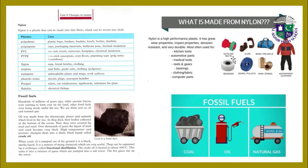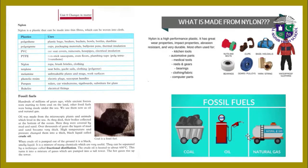When crude oil is pumped out of the ground, it is a black, smelly liquid. It is a mixture of many chemicals which are very useful and can be separated by a technique called fractional distillation. Nylon is a high-performance plastic with great wear and impact properties — very durable. It is most often used for kitchen tools, automotive parts, medical tools, reels, gears, bearings, clothing, fabric, and computer parts. Coal, oil, and natural gas are all fossil fuels.